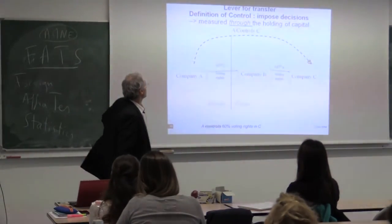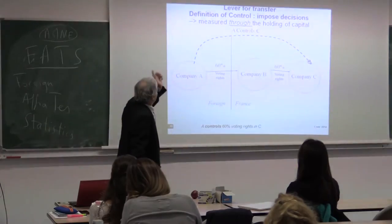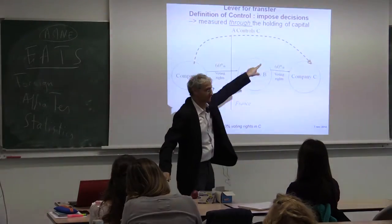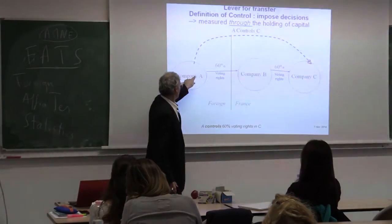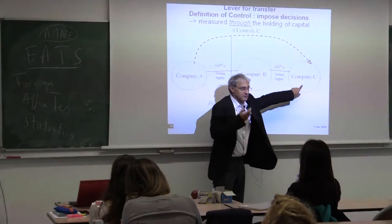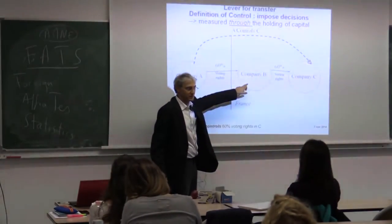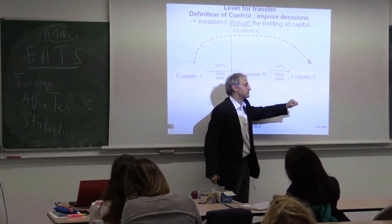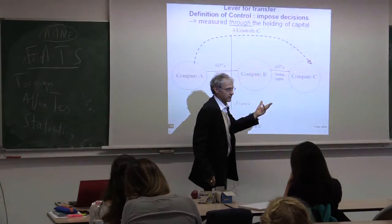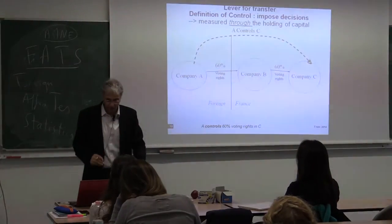Control means the power to impose decisions. For example: company A has majority of voting rights in company B, so A can impose. Company B has majority of voting rights in company C, so B can impose a decision in C. Hence, A controls C indirectly. It could be 50% plus 1 — I take 60% for the example. The notion is to impose decisions, measured through the holding of capital — and note that you can have double voting rights on some shares.